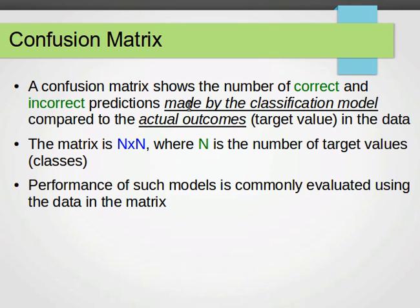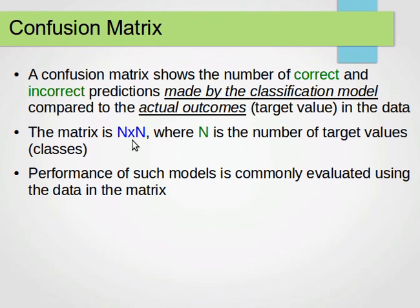We have actual outcomes and we compare them to the predicted ones by the model. The matrix is n by n, where n is the number of target values or classes. If we have 9 classes, then we have a 9×9 matrix; if we have 5 classes, a 5×5. But remember, in this video we will only have 2 classes, so it's going to be 2×2. The performance of such models is commonly evaluated using the data in the confusion matrix.